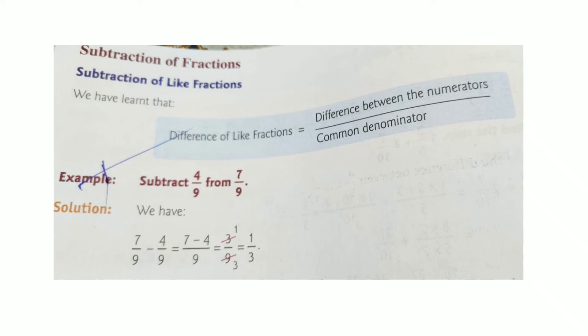7 by 9 minus 4 by 9. Step 1: Subtract the numerator, 7 minus 4. Step 2: Write the common denominator, that is 9. 7 minus 4 is 3.